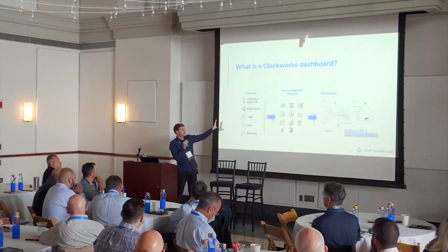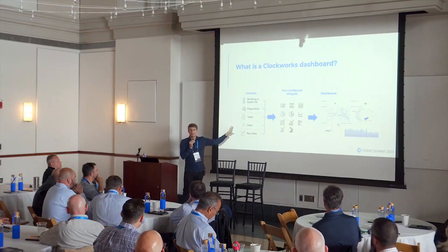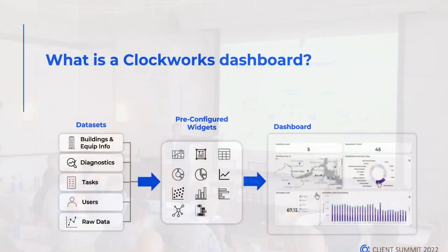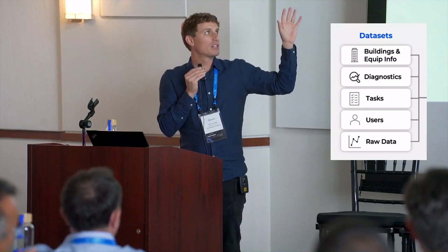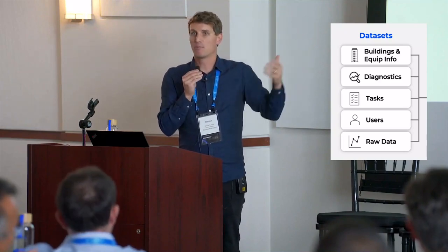When we're talking about a Clockworks dashboard, what's really unique is that we start with this flow of what data sets do we have available in Clockworks, and we break them down in this way. We know information about your buildings and equipment — anyone who's updated an equipment variable knows that we track horsepowers, capacities of equipment, where your building is in the world, and what climate zone it's in. We have a pretty rich data set about the profile of your building and the equipment contained within it.